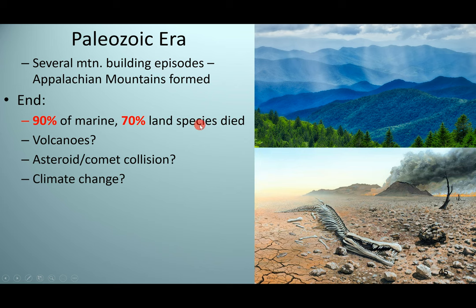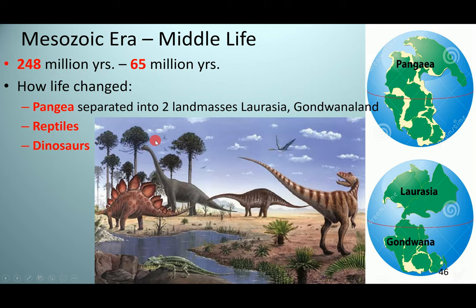The Paleozoic era ended with one of the biggest extinction events in Earth's history — 90% of marine life died off and 70% of land species died off. It could have been a huge volcano, asteroid, comet collision, or climate change. The Mesozoic era, the age of middle life, spans from 248 million to 65 million years ago. Pangea began to divide into two landforms, reptiles started to form, and then dinosaurs evolved — making this the age of the dinosaurs and reptiles.